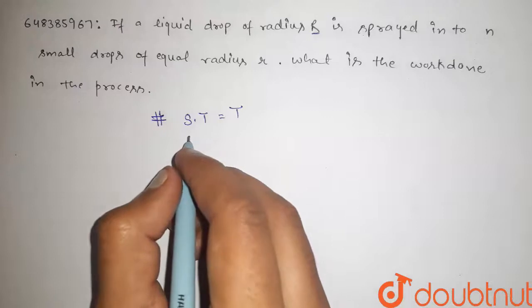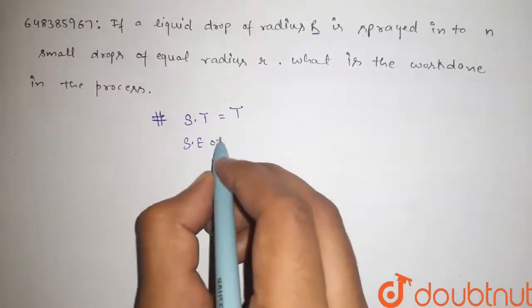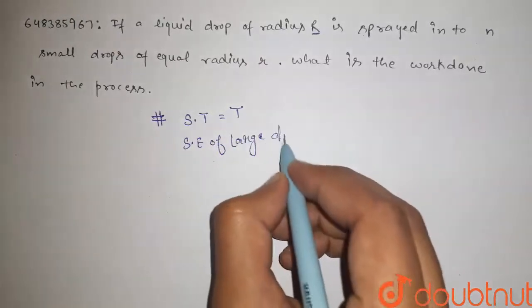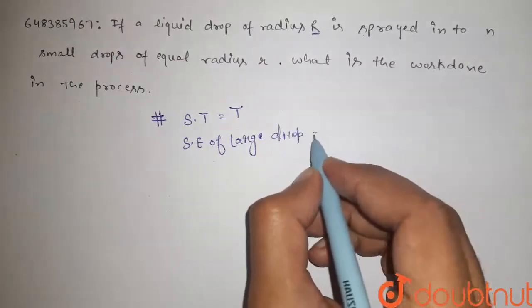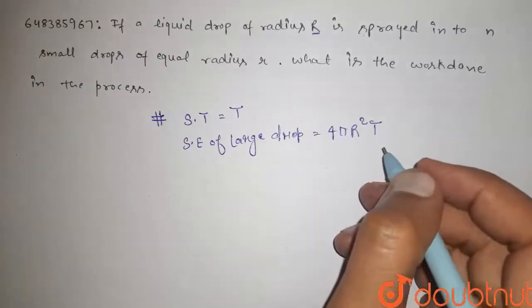Surface energy of the large drop, that is surface area 4πR² times surface tension T.